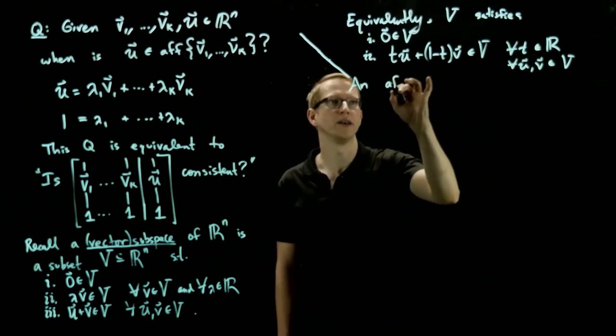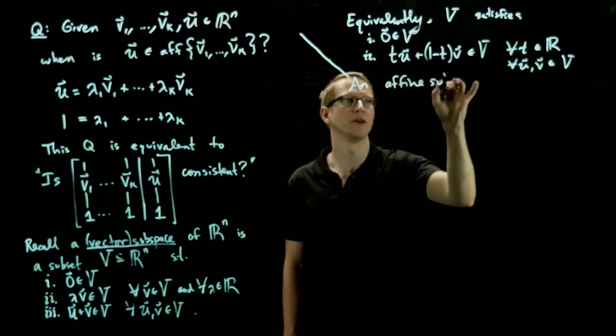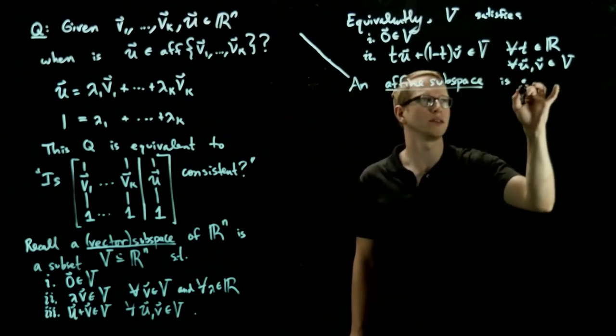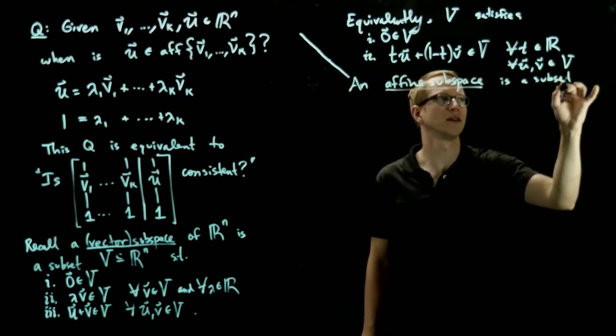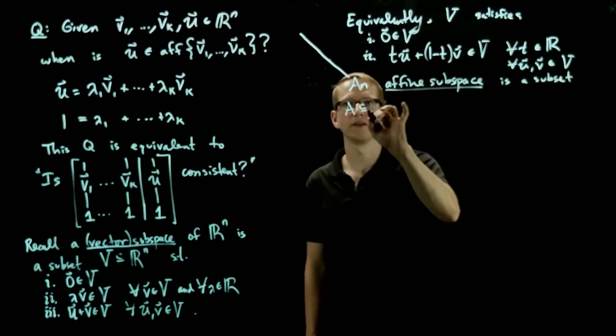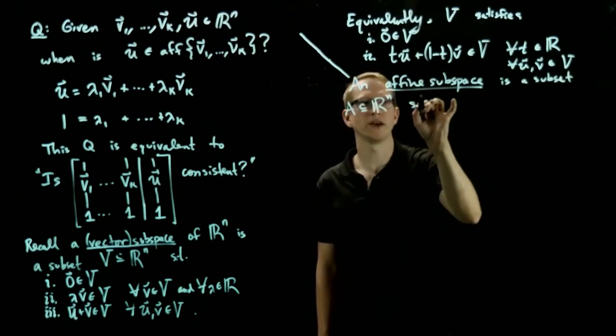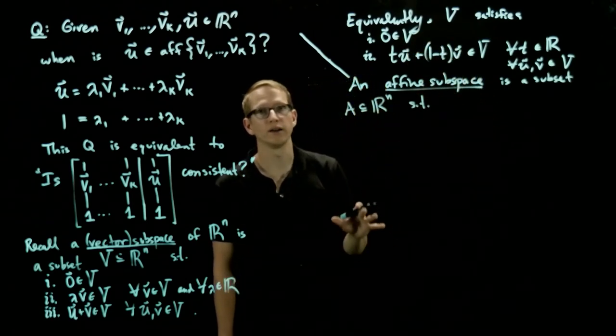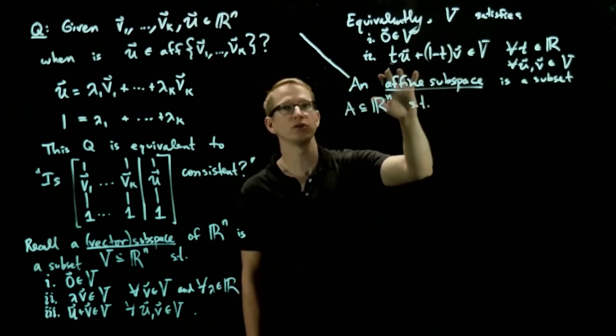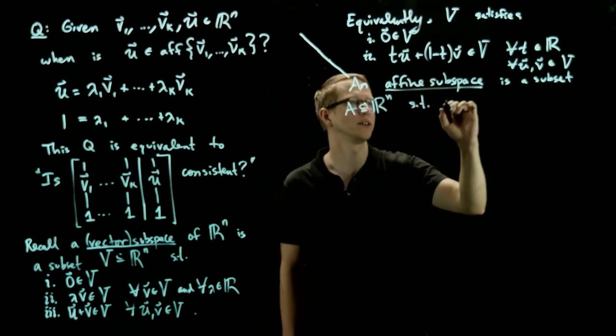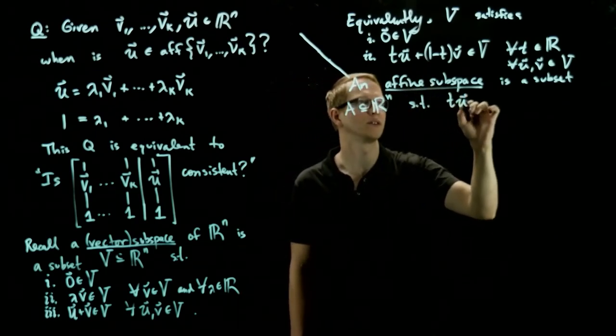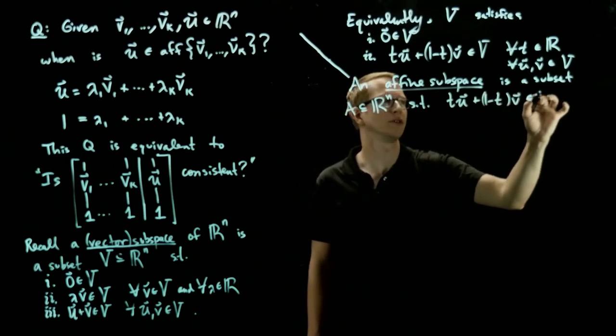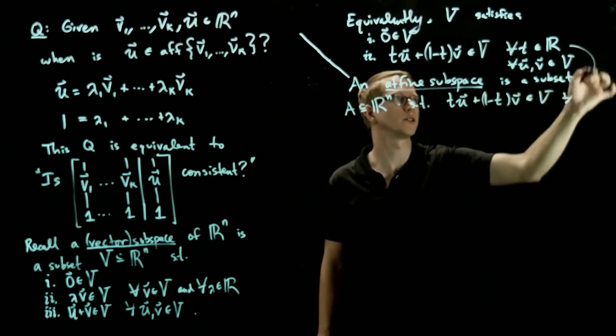So we define an affine subspace is a subset A of R^n such that, and now we drop this first condition. So all we require is that affine combinations of two vectors are always inside. So t*u plus (1-t)*v are in V for all same conditions as here.